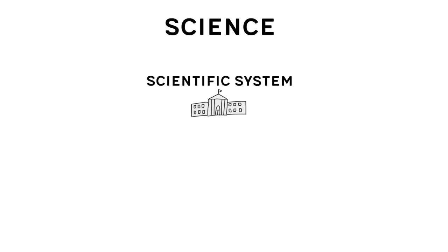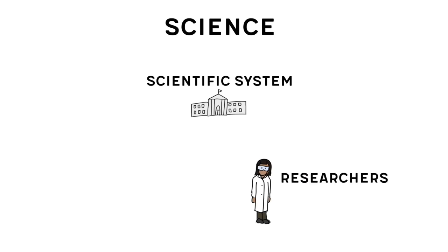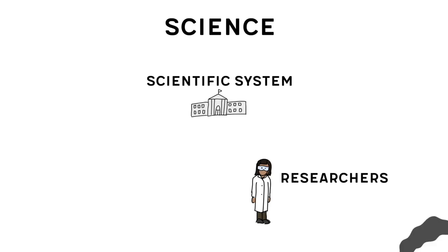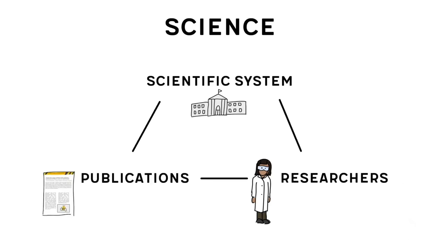With that out of the way, let's look at the things that make science, science. There are three parts of science that are connected. The first one is the scientific system — this is the way science is done. Next up we have people who do the science; the scientific term for them is researchers. Finally, there are publications — this is the front end of science, the stuff we look at most of the time. There are several different kinds, and not all of them are equally trustworthy.